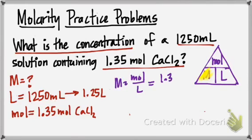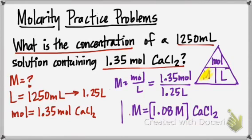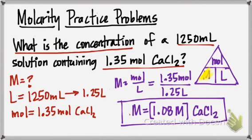So that's going to be 1.35 mole over 1.25 liters. Once you run those numbers, it's going to give you 1.08 molar. And I'm going to put that in a bracket, and then I'm going to throw what compound it is in there as well to remind me of what exactly it is I'm dealing with. So my molarity is 1.08 molar calcium chloride.